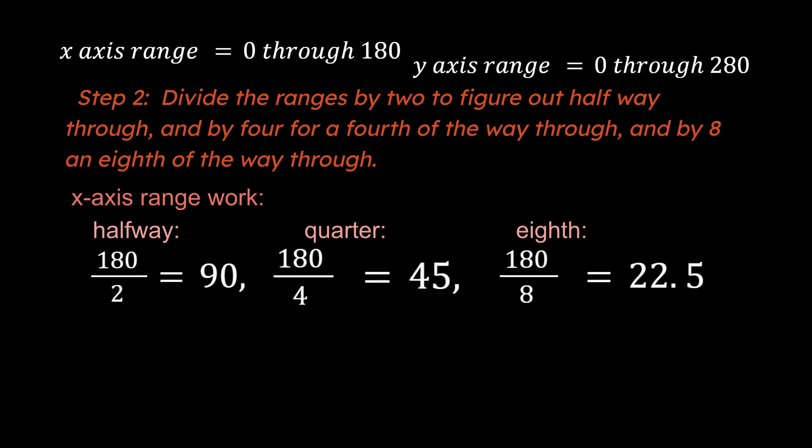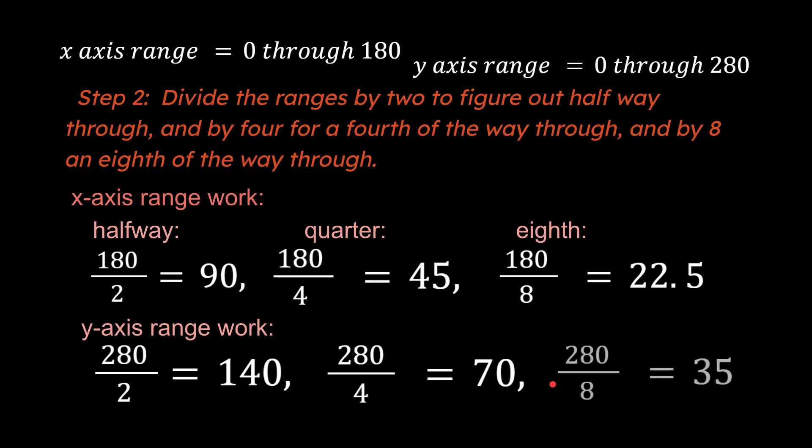All right so if we said 280 is our total range that we have to deal with and halfway through would be 140 units of whatever it is we're dealing with. And a fourth of the way through would be 70 units and an eighth of the way through would be 35 units.